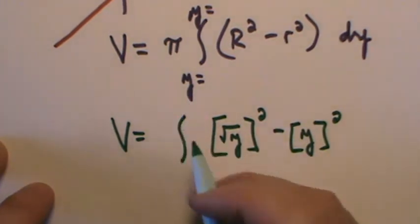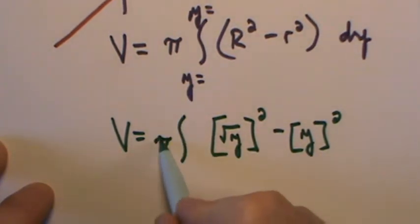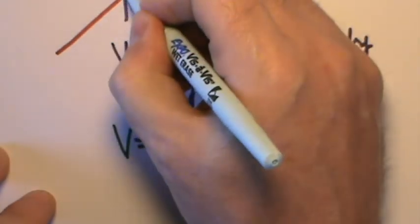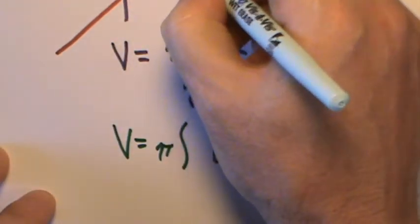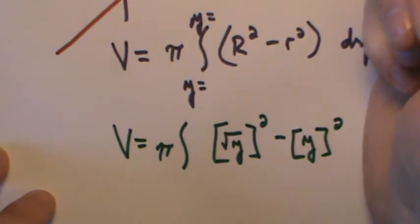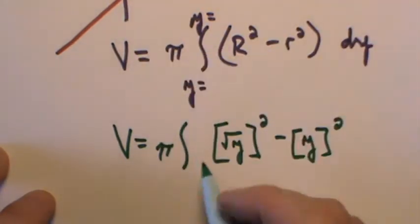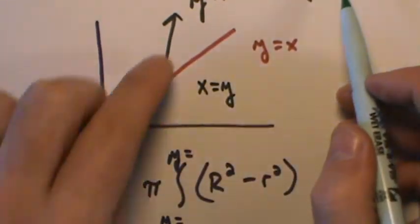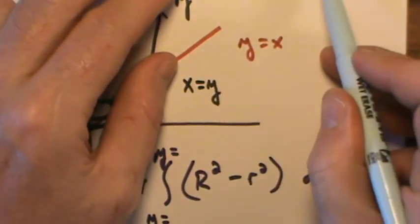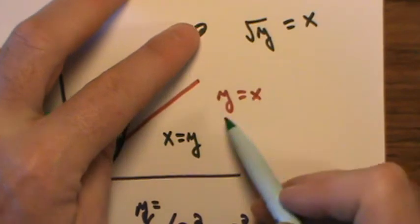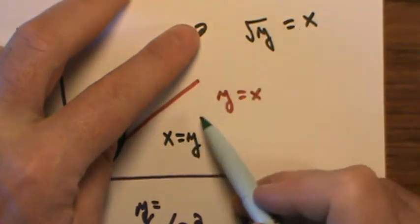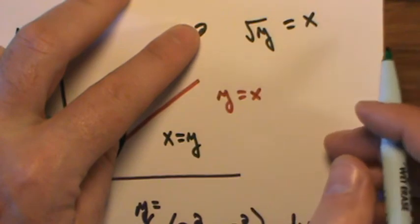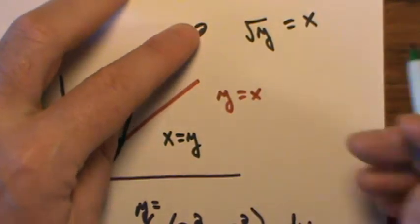And notice, I'm leaving that pi out there, and I didn't do these values for the y yet. I have to consider where this is as a y value, and this is as a y value. It too will be from zero. Now think about this. I'm looking at these two functions right here, this one and this one. When would those x's be the same? When is square root y equal to y?